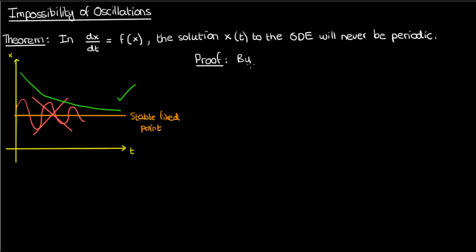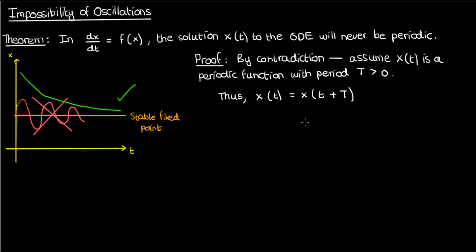The proof of this theorem is pretty simple, and it works by contradiction. Just a reminder that whenever you're proving a negative statement, like when something's impossible, then it's generally common practice to use proof by contradiction. We'll start this proof by assuming the opposite of what we want to prove. So we'll assume that x(t) is a periodic function, that's the solution to this dynamical system, and the period of this periodic function is capital T. Because of this periodicity, we know that x(t) must equal x(t + T).